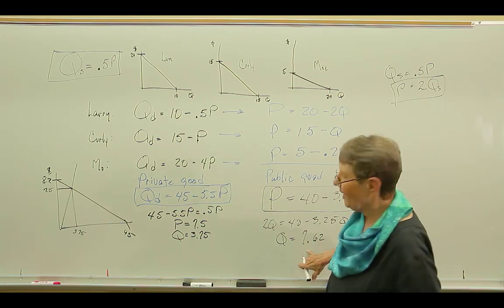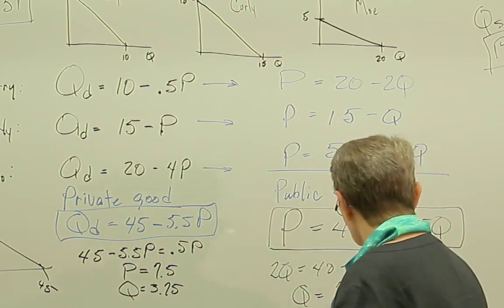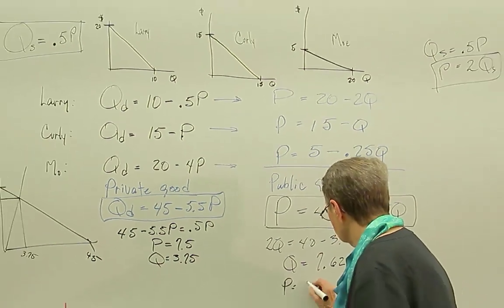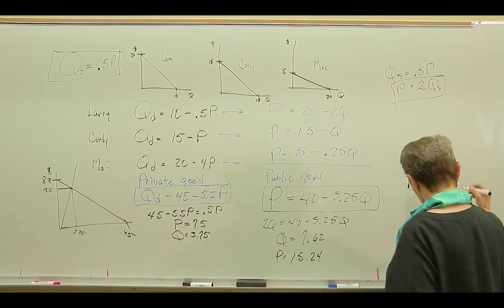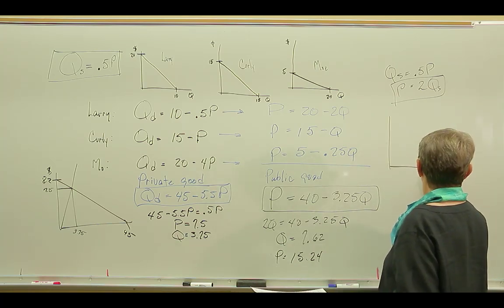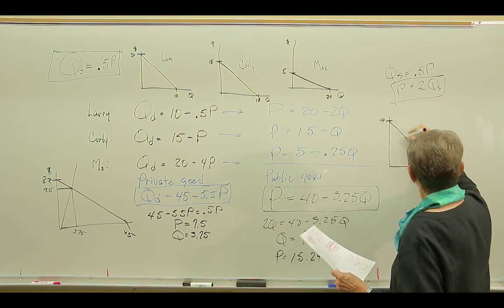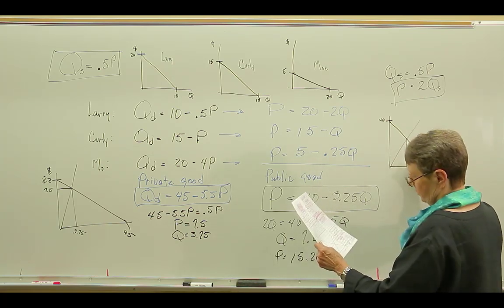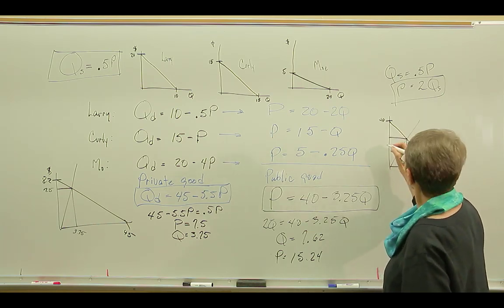So the quantity is a lot bigger if it's a public good than if it's a private good. And the price is a lot different. If the quantity is 7.62, then the price is going to be 15.24. And so my demand curve looks like this, 12.3, and the price is 40. There's my demand curve. My supply curve is still the same. And this is 7.62, and this is 15.24.